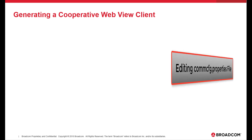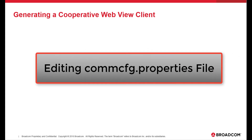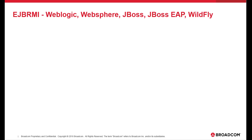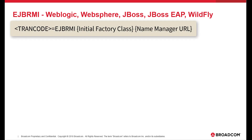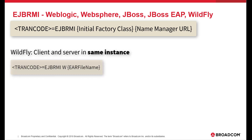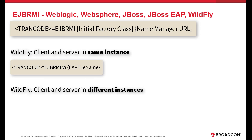Use the com.config.properties file if you want to overwrite the default server communication properties. For EJB RMI, the format of server manager properties is as follows. For Wildfly, when client and server are in the same instance, the format is one form; when client and server are in different instances, the format is another.